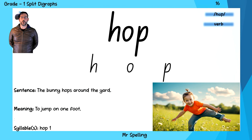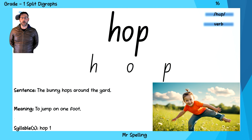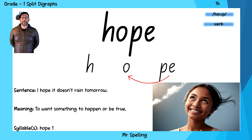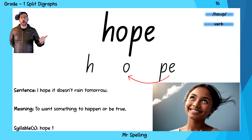Hop is the next word on our list. I went to hop in the playground. Hop. And the sounds of hop are H, O, P — hop. And if you add a silent E to the end of hop, you get the word hope. I hope to be YouTube famous one day. Hope. And the sounds of hope are H, O, P — hope.